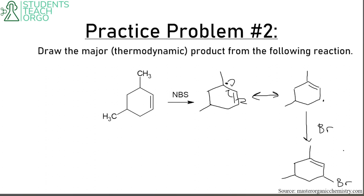Once again, it's similar to the other problems. Form the most stable radical, and if they're asking for the major thermodynamic product, do your resonance and then add your bromine.